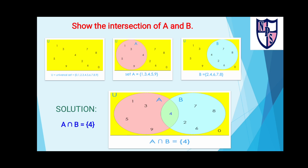Second one is the Venn diagram which shows set A, which is part of the universal set. Set A contains 1, 3, 4, 5, and 9 as its elements. The third one is a Venn diagram of set B. B is also part of the universal set and contains elements 2, 4, 6, 7, and 8.